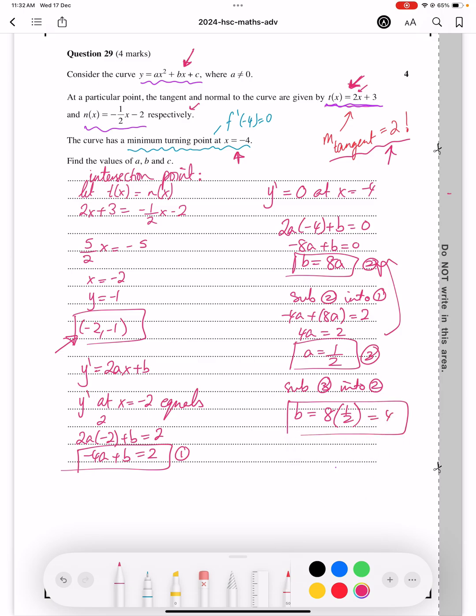Now, to find c, we need to use this point here. So, to find c, we've got minus 1 equals a, which is half, x squared, which is 4, because minus 2 all squared is 4, plus bx plus c.